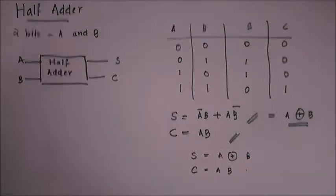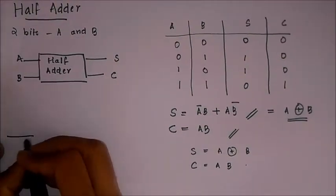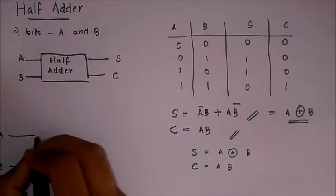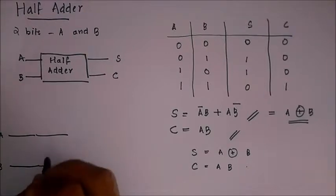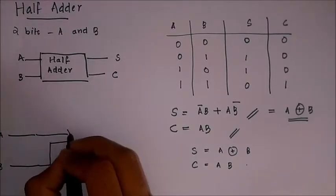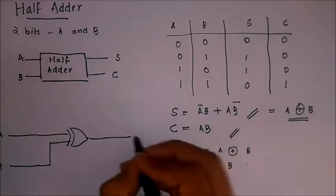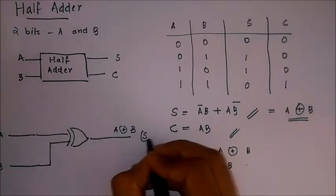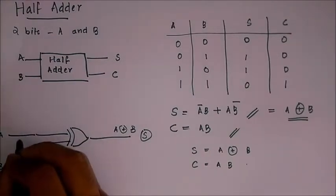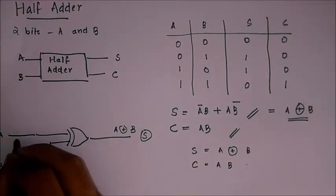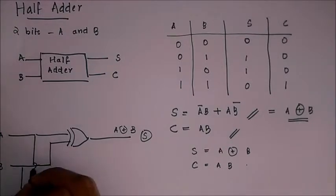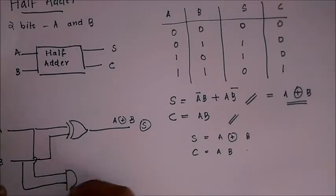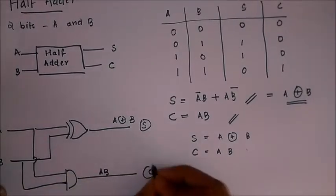So we can realize the circuit of half adder simply as: we give two inputs A and B, and for sum these inputs will be given to an XOR gate A XOR B. This is our sum. And now for the carry, we give A and B to an AND gate which gives A B, which is our carry.